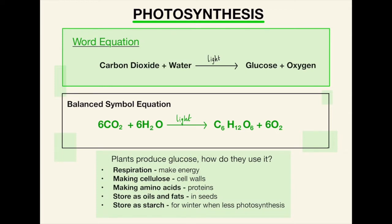We also have the balanced symbol equation which is also very important to remember. 6CO2, 6H2O uses the light to convert into glucose which is C6H12O6 and 6O2. Now as you can see through this word equation and the symbol equation the plants use photosynthesis to create their own glucose.